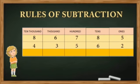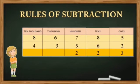As you can see, the numbers are arranged properly and we can easily subtract them. We start with the ones column: 5 ones minus 2 ones gives 3 ones. Then the tens: 8 tens minus 6 tens gives 2. Then the hundreds column gives 2. In the thousands column, 6 minus 3 gives 3. Finally, in the ten thousands column, 8 minus 4 is 4. So the difference is 43,223.